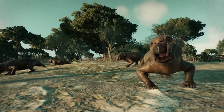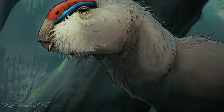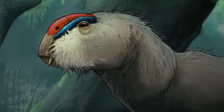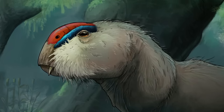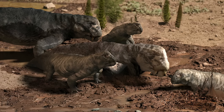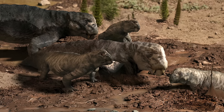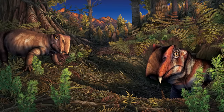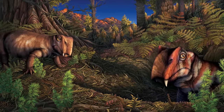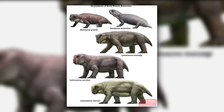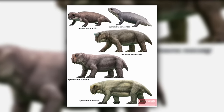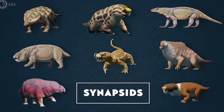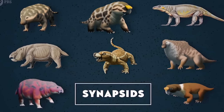Lystrosaurus was a herbivore. The animal did not have teeth in the usual sense; instead, it had two tusks that projected downwards from the maxilla for digging up the roots of plants. Apart from this, Lystrosaurus had horny beaks for shearing and snipping off vegetation above ground, and used a secondary palate in their mouth to grind the vegetation. Lystrosaurus belonged to a group of therapsids known as dicynodonts, which includes some of the closest relatives to mammals within the synapsid lineage.